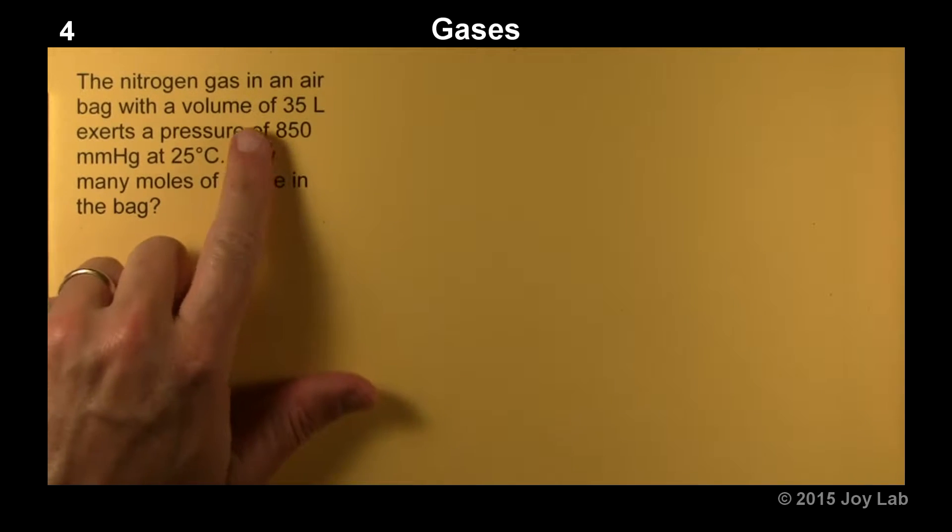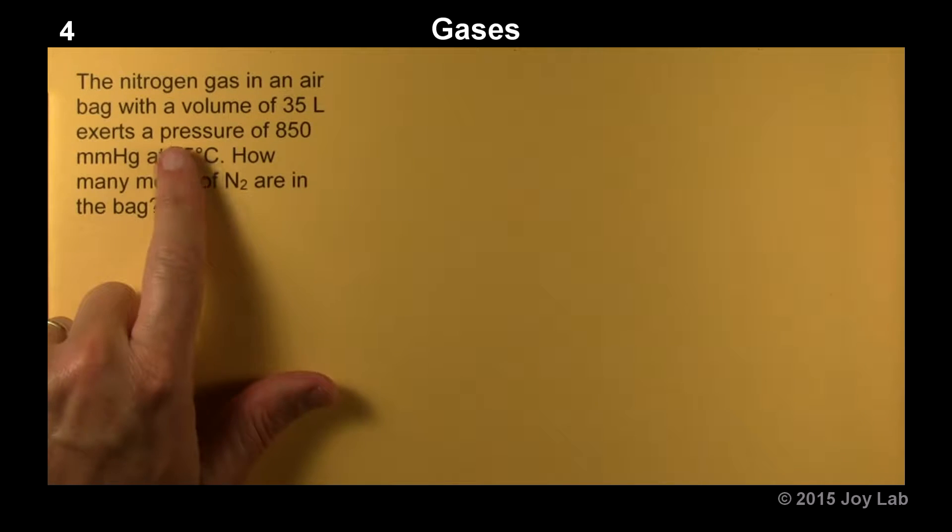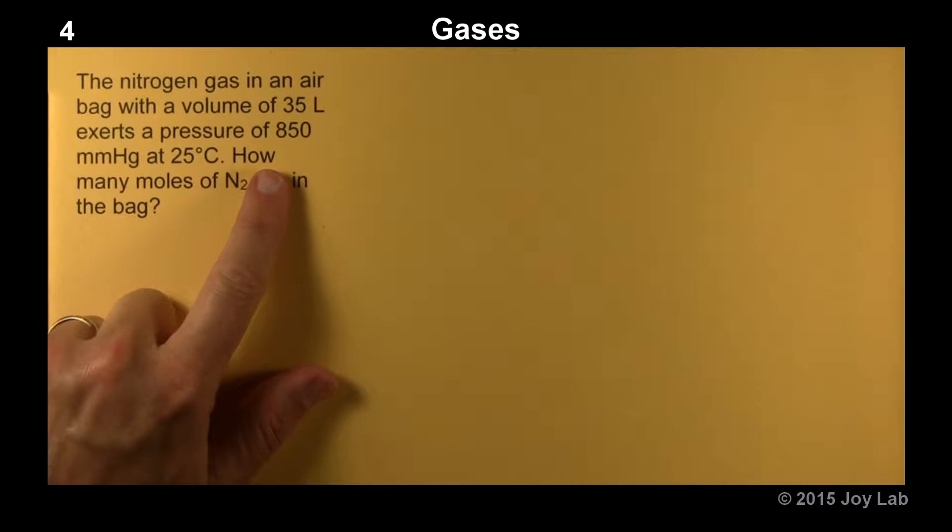All right, here we have some nitrogen gas in an airbag with a volume of 35 liters and a pressure of 850 millimeters mercury at 25 degrees C. We want to find out how many moles are in there.